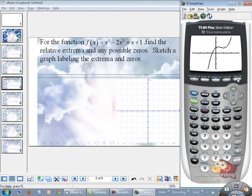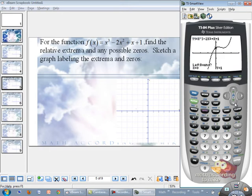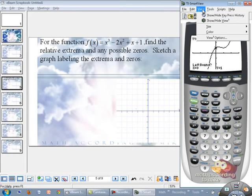Let's find the relative extrema first. So notice right about here, we have a relative max, and right down here we have a relative min. We're going to find one at a time. To find your extrema, you go to second calc. And notice number four there, is maximum.